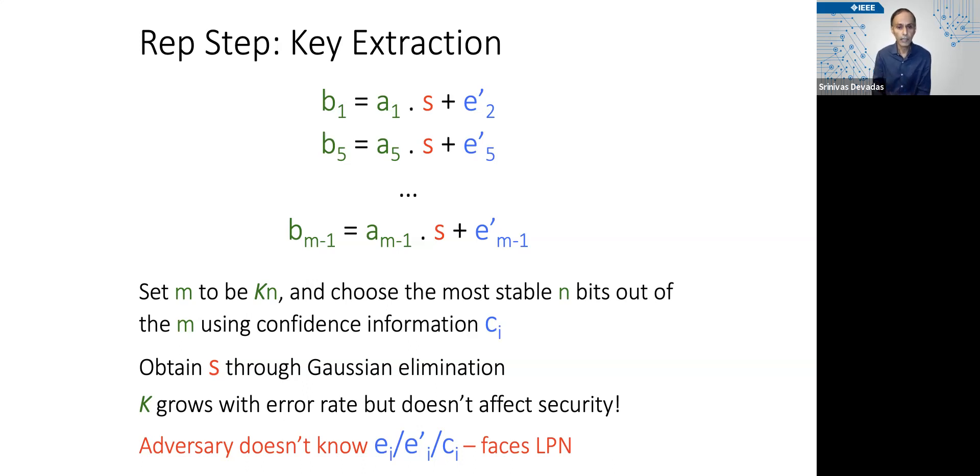K does not affect security because as I said, regardless of M, M can be larger than N, but our LPN assumption essentially says that as long as each of the eᵢ values is generated randomly, the adversary is going to have a difficult time solving LPN and the adversary does not know the eᵢs or the e′ᵢs or the cᵢs.